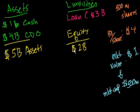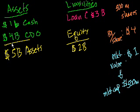So the market is actually saying no, you don't have $2 billion of equity — you only have half a billion of equity. It's probably because they think the CDOs are worth a billion and a half. But we'll leave that aside for now.